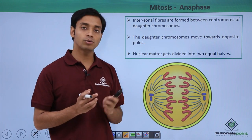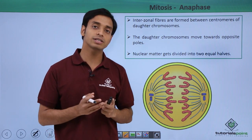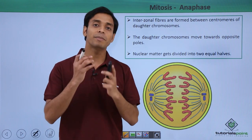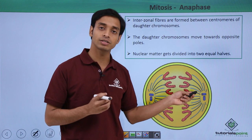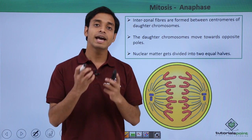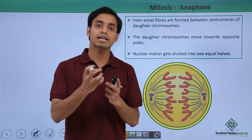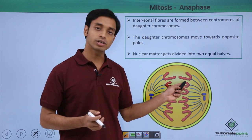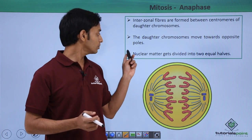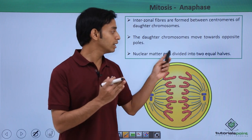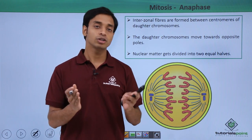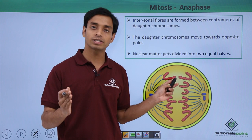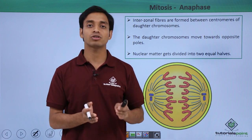The daughter chromosomes start moving towards the poles because the microtubules coming from the asters start depolymerizing — they shorten in length — causing the chromosomes to move towards the opposite poles. The nuclear matter gets equally divided into two equal halves, with one half going to one daughter cell and the other half to the second daughter cell.